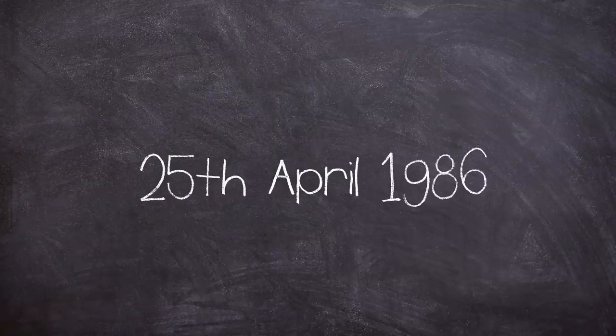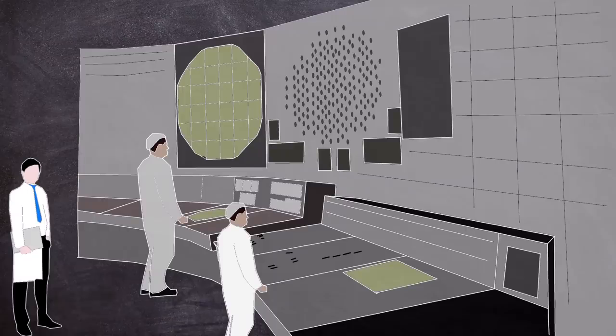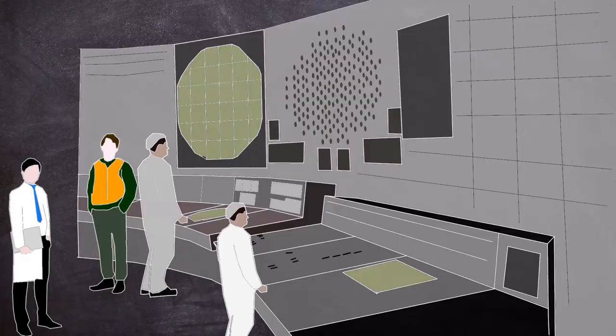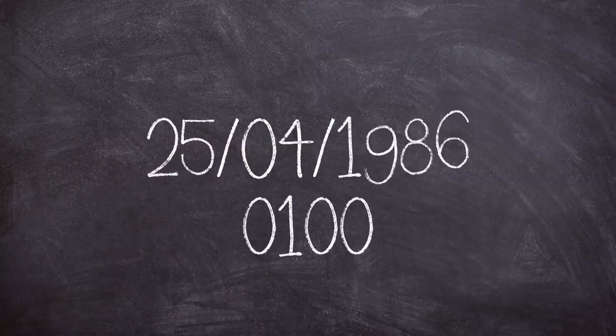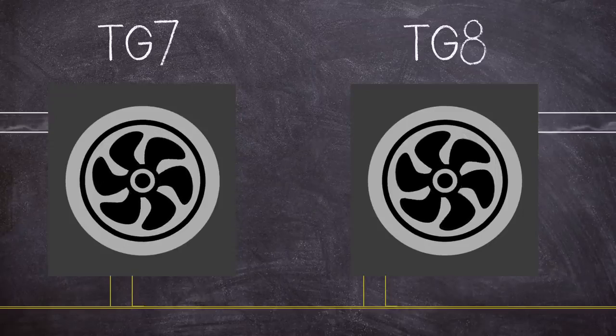The date of the test was to be the 25th of April 1986, 15 minutes past 2 PM, completed by the day shift. As such the operators were briefed on the procedure and a team of electrical engineers was present. At around 1 AM on the 25th of April the reactor was gradually powered down to around 50% in time for the day shift. At 1:05 PM the turbo generator TG7 was switched off.